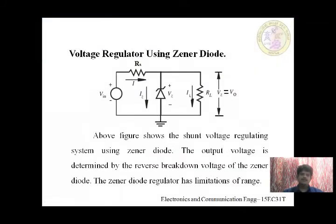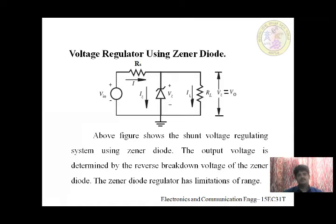Here we are dealing with the voltage regulator using the Zener diode. Before going to the circuit and its explanation, we will discuss the Zener diode. In the previous semester we learned about the Zener diode. The major difference between the Zener diode and the normal diode — what are the main characteristic differences?